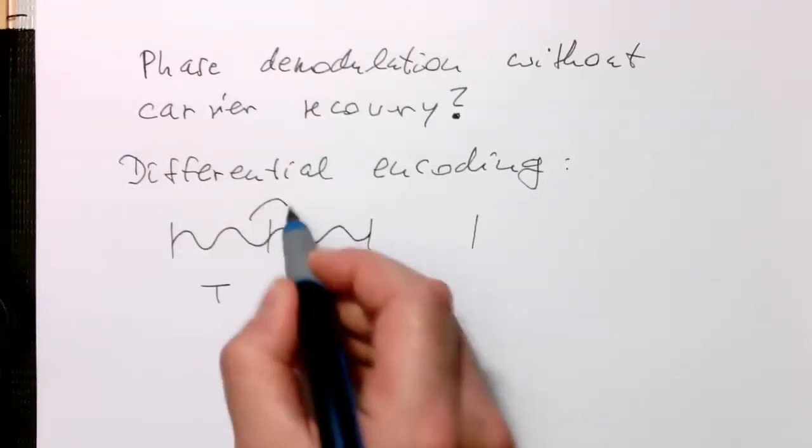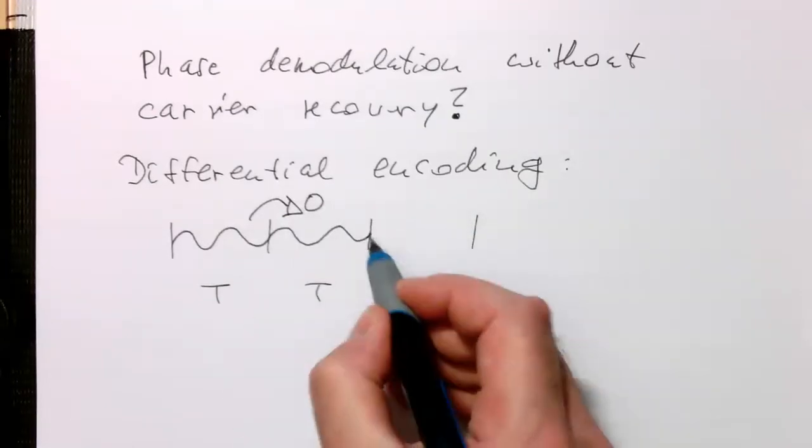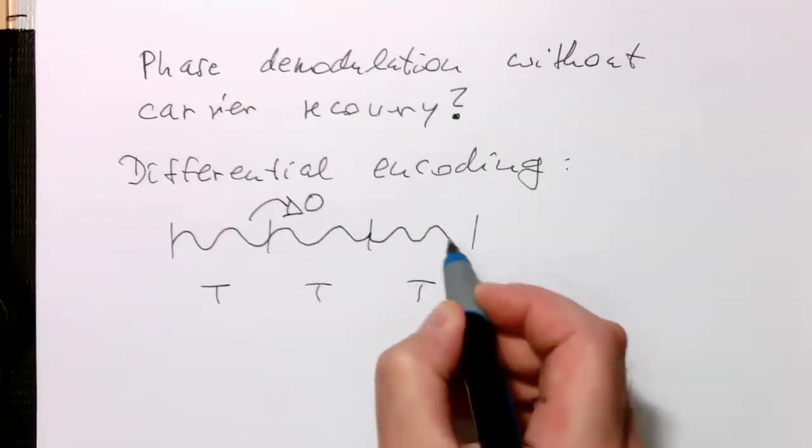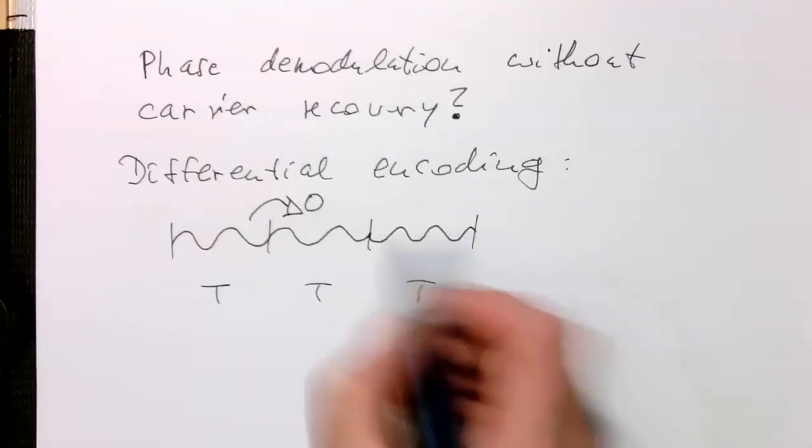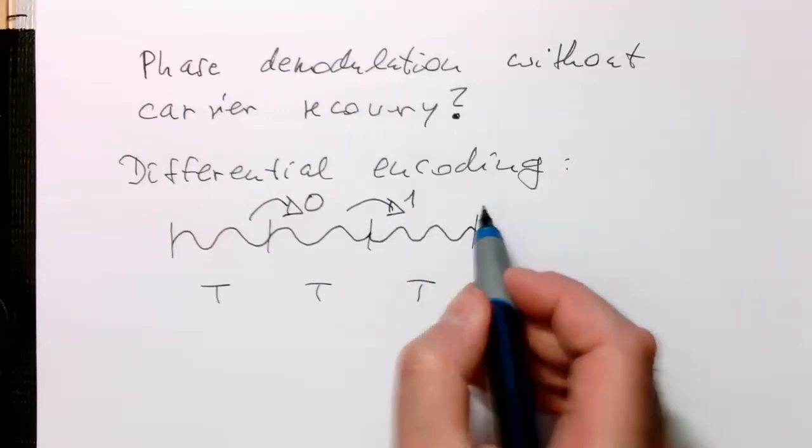And the idea is now the following: because there's no phase change between these two sections, that's a zero. And between section number two and three, there is now a phase change, and we call it a one.